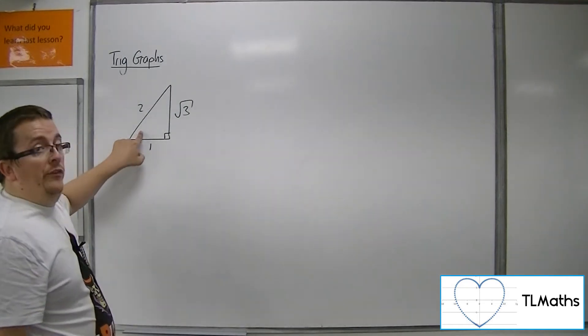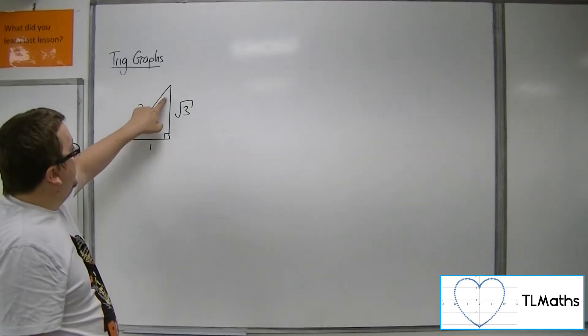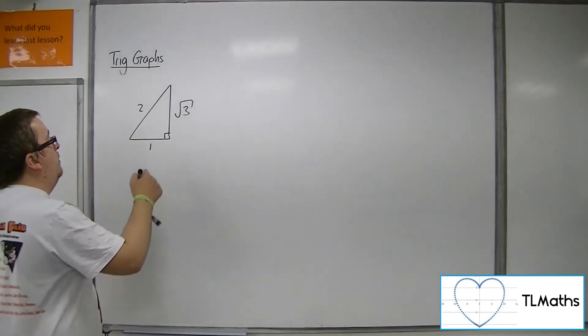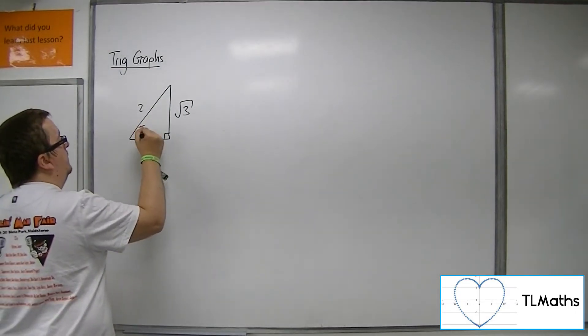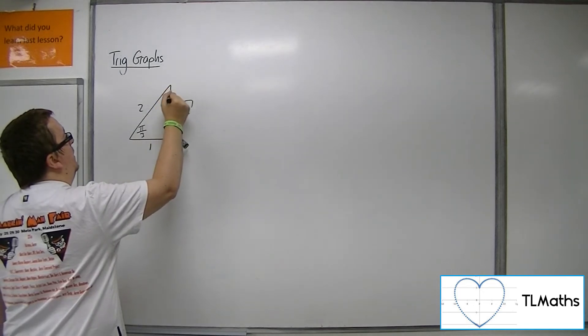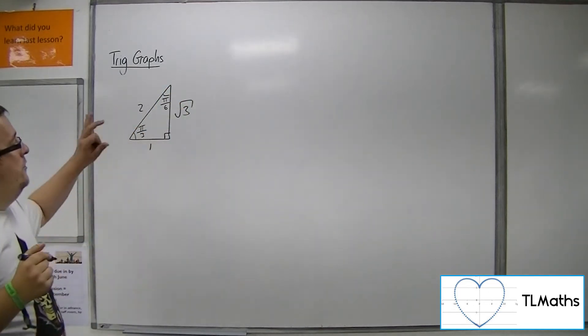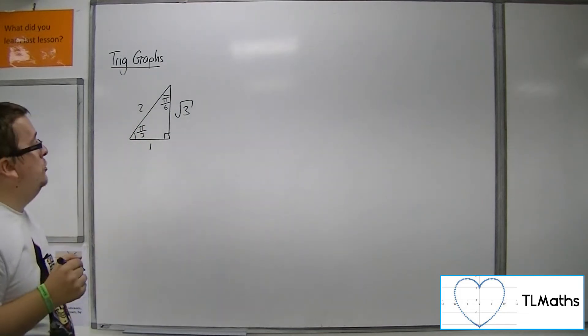So this angle was 60 degrees, that angle was 30 degrees. So in radians, this will be pi over 3, and this will be pi over 6. So that is the first of the two triangles.